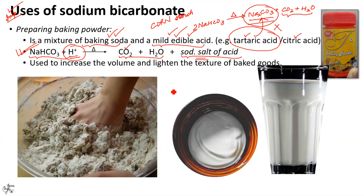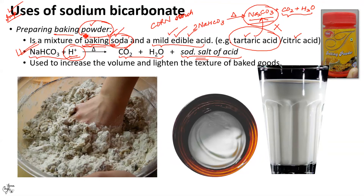If you are not sure whether you will remember the difference between baking soda and baking powder, here's a simple trick. The word 'baking' is common to both. Simply remember the first alphabet of the second word. S means soda and S implies single ingredient — it is simply a single ingredient, not combined with anything else. Whereas the first alphabet of the second word in baking powder is P. P implies plenty — meaning two or three ingredients are added into it. Even if you remember one of them, you will be able to recall the other one correctly.